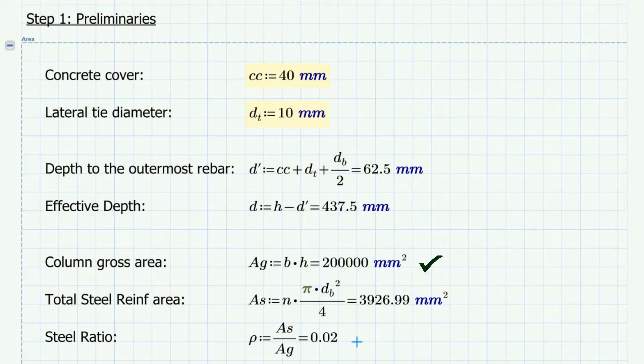Then we can calculate for the effective depth and the depth of the outermost bar. So just to do a check, based on the cross-section of the column and the given reinforcement, the steel ratio is about 2%, which is good because ACI code specifies 1% to maximum 6% for columns subjected to both axial load and bending moment.